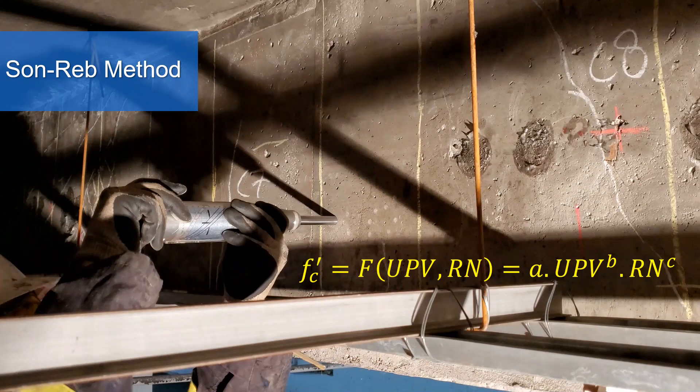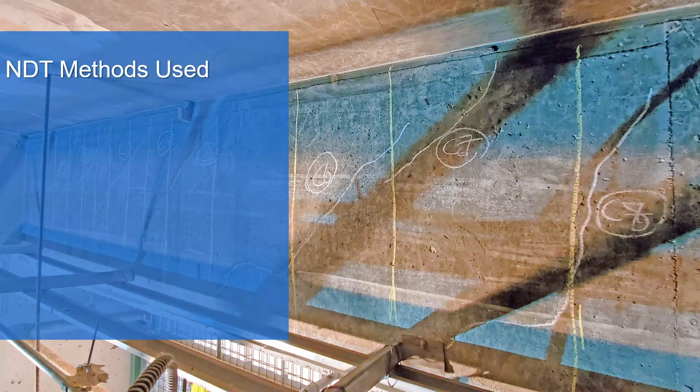To wrap up what we discussed today, visual inspection is the first step towards evaluating the condition of concrete beams. Crack width rulers can be used to identify the severity of cracks, while UPV method can help engineers in evaluating the crack depths.